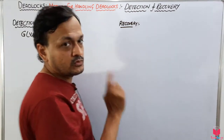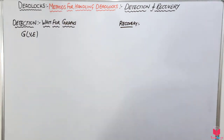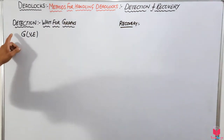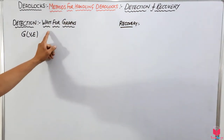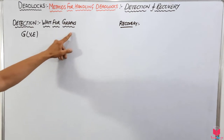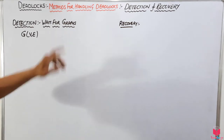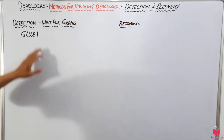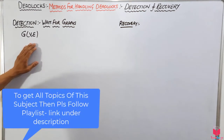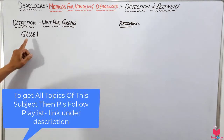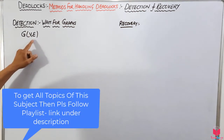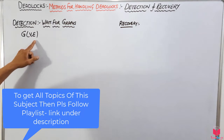So let's see how we can detect deadlock. There is a method called the wait-for graph method by which we can detect deadlock in the system. This graph consists of V and E — V for vertices and E for edges.